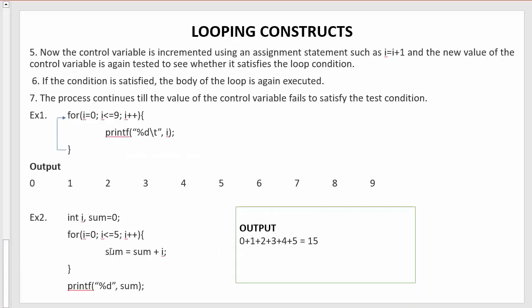Here are two examples. The first example prints the numbers from 0 to 9. The for loop starts with i initialized to 0. The test condition checks: is 0 less than or equal to 9? Yes, so control enters the loop and prints 0. Then i is incremented to 1. The condition checks: is 1 less than or equal to 9? Yes, so 1 gets printed.